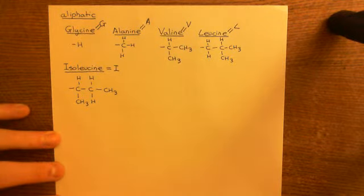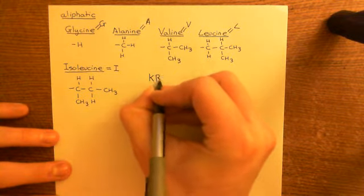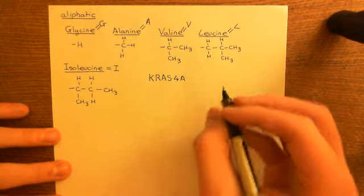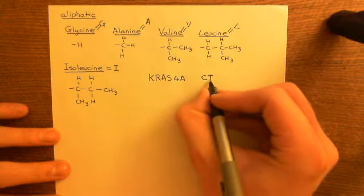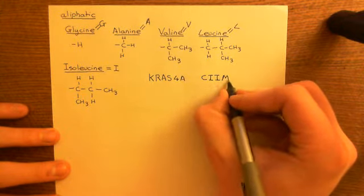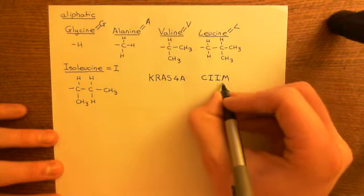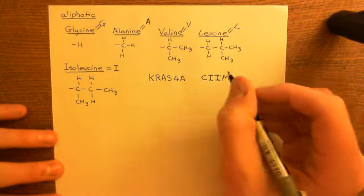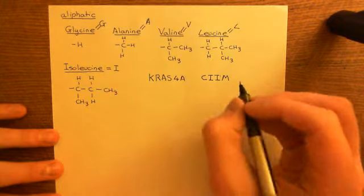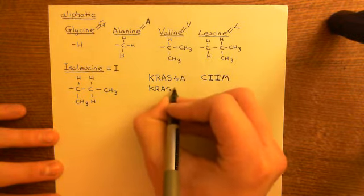Now let me show you the CAAX box structure of the different RAS proteins. KRAS-4A was our first example: its CAAX box is cysteine four-in from the terminal amino acid, then two isoleucines, and then the terminal amino acid is a methionine. Remember that final amino acid had to be either methionine, serine, or alanine for it to work. So this fits — we have a cysteine four-in, then two beautifully aliphatic amino acids followed by a methionine. This is a CAAX box.